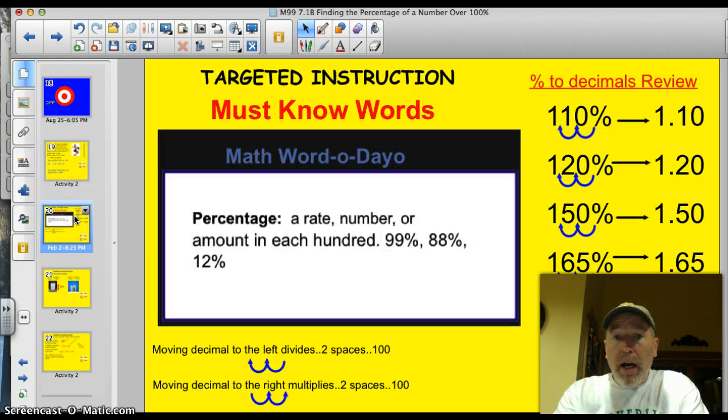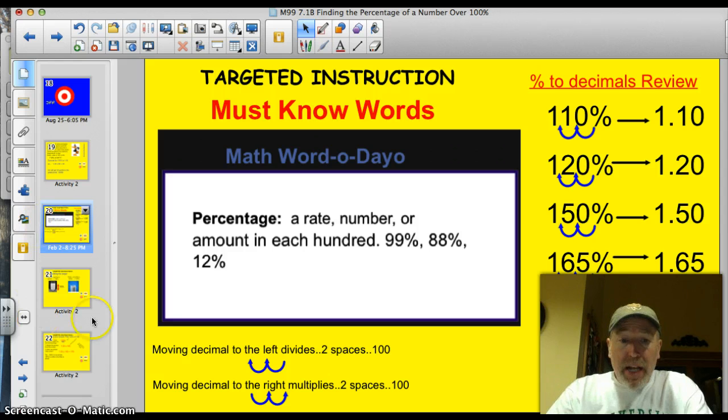Here is the word of the day again. Percentage. It's going to be the word for four lessons in a row. Percentage is the amount in each 100, or the rate per 100. Tonight, once again, moving the decimal helps us to divide. So, we move the decimal two places to the left to divide by 100. Of course, if we wanted to multiply, we'd go the opposite way.